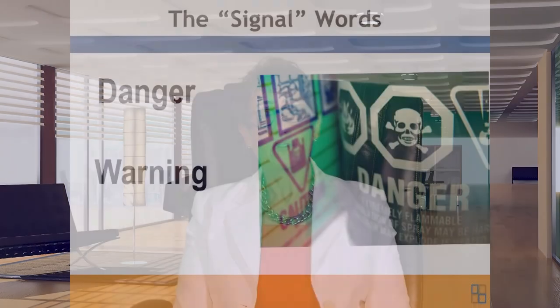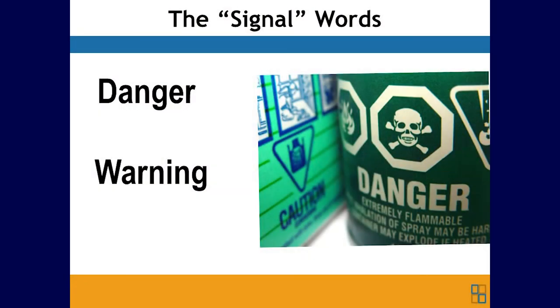There's another part of the label called the signal word — there are just two: danger and warning. These indicate the relative severity of the hazard. The signal word 'danger' is used for more severe hazards, while 'warning' is used for less severe hazards.